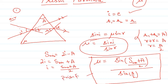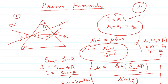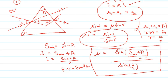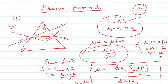This relationship is known as the prism formula. We take the prism, apply the minimum deviation condition — i equals E and R1 equals R2 — then apply Snell's law where mu is the refractive index of the prism medium. Substituting the values, mu equals sin((delta minimum plus A) / 2) divided by sin(A/2). I hope you understand this derivation. Thank you very much.